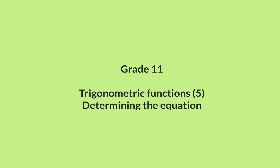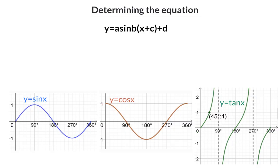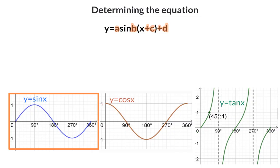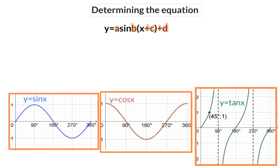In this lesson, we are going to determine the equation of trig functions. To determine the equation of a trig function, you need to determine which of the four transformations that we had a look at in the previous few lessons have been applied to the specific graph. For this, you need the knowledge of the three basic graphs, and with each one, you will focus on very specific coordinates and values.